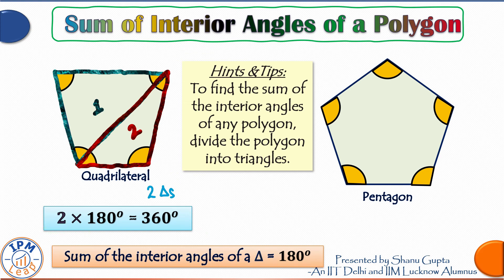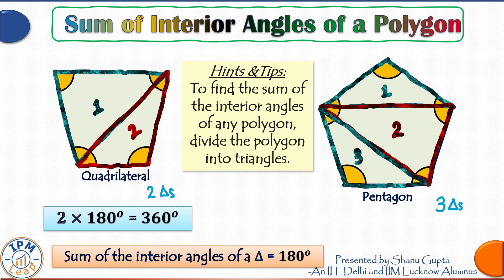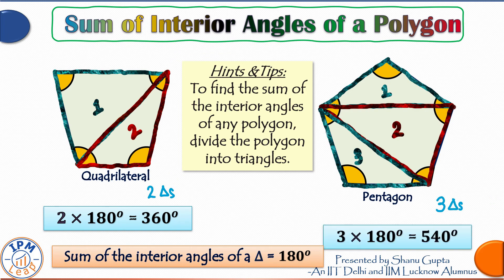Next we have the pentagon. To divide this into triangles we can pick any one vertex and draw all possible diagonals — one and two, two diagonals possible — and the pentagon has been divided into three non-overlapping triangles: one, two, and three. The sum of interior angles of a pentagon will be three times that of a triangle: three times 180 degrees is 540 degrees.